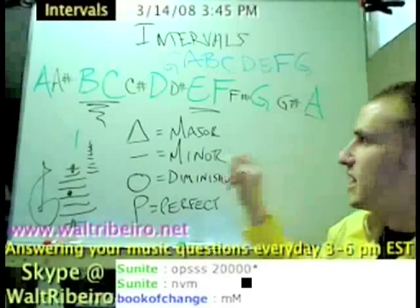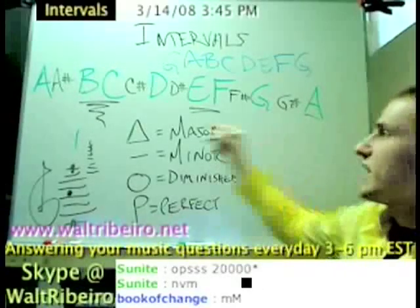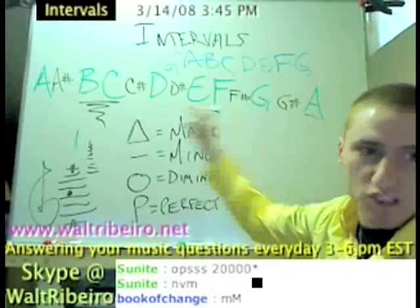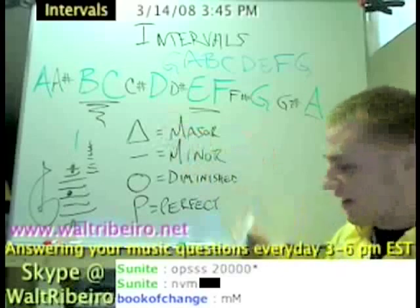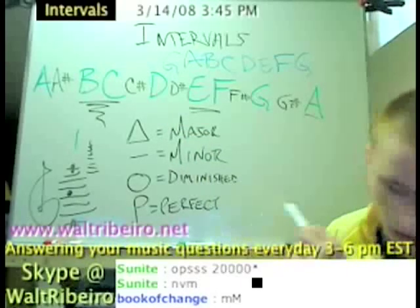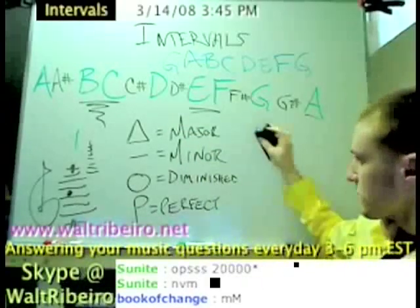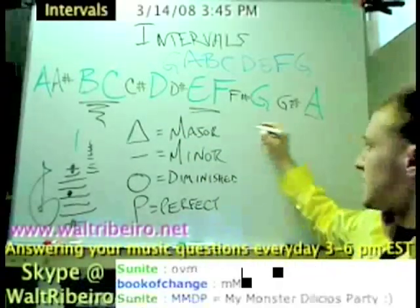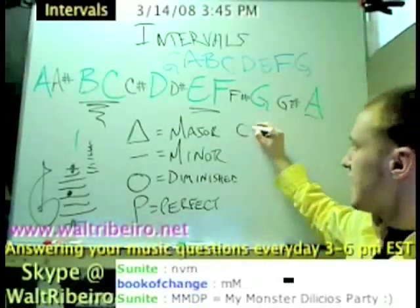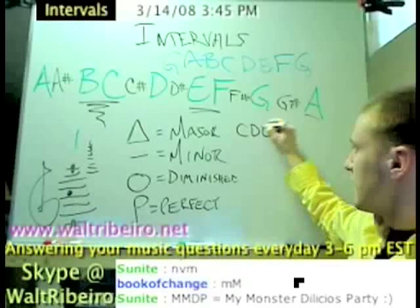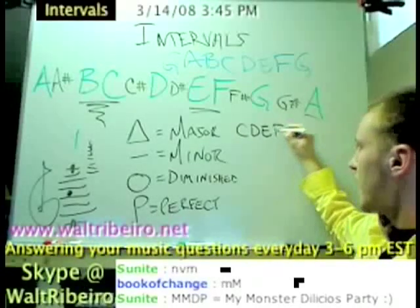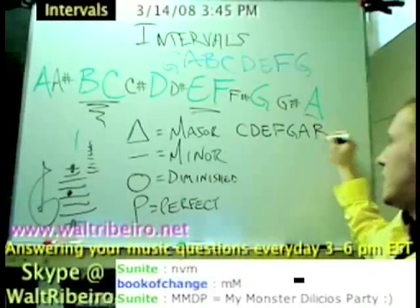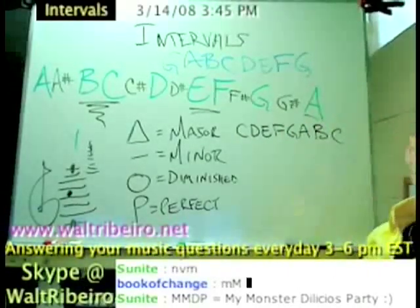When you're discussing intervals, you only have seven intervals in a piece of music. So let's do this: C, D, E, F, G, A, B, C.